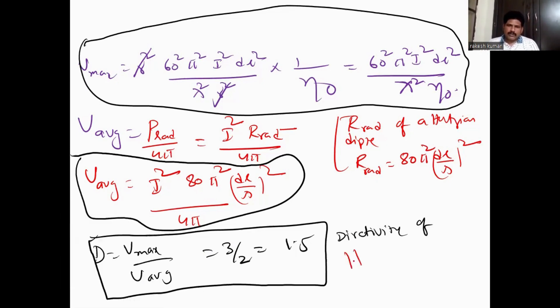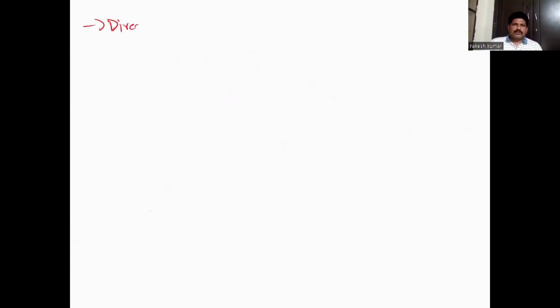Now for the directivity of an isotropic antenna. An isotropic antenna is one which radiates equally in all directions. So D equals u_max divided by u_average. For an isotropic antenna, the maximum value equals the average value.